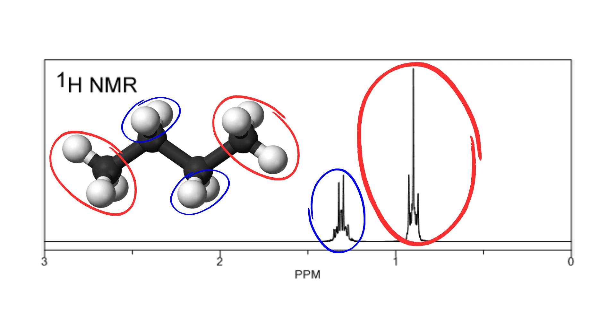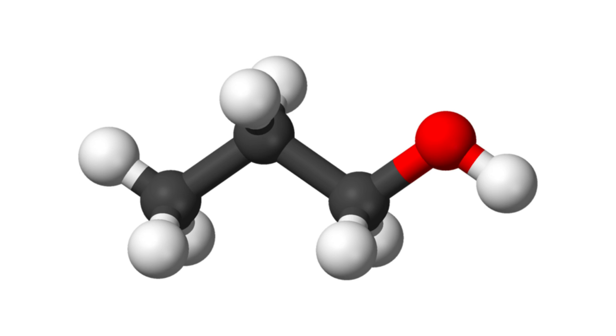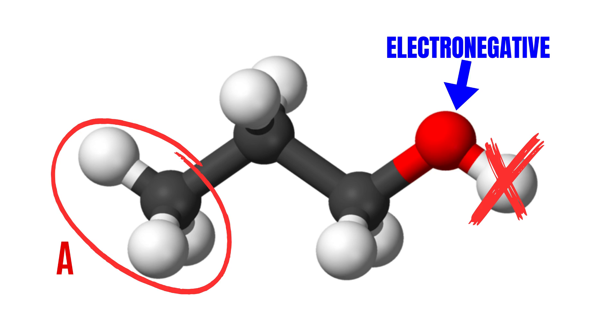Let's take a look at propanol next. First thing to note is that the hydrogen in the alcohol group can be sneaky, as its location can vary by a lot and in some cases it won't even show up at all. So for that reason, let's exclude it for this example.